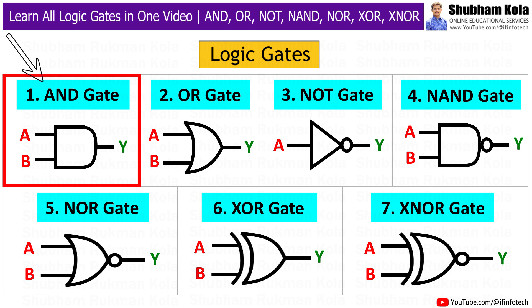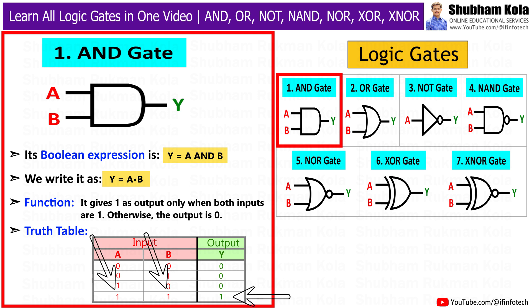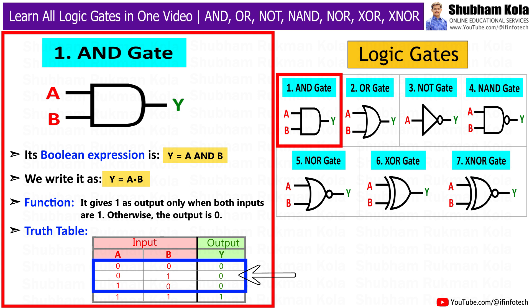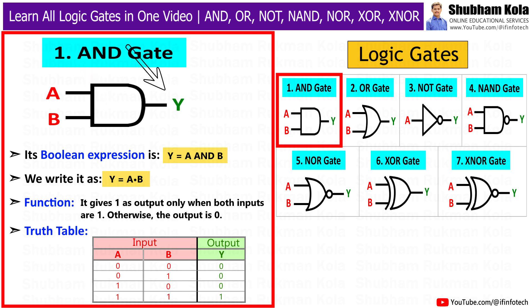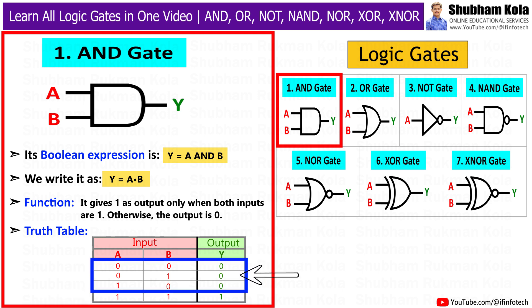The first gate is the AND gate. Its Boolean expression is y = A AND B, written as y = A · B. It gives 1 as output only when both inputs are 1; otherwise, the output is 0. Its symbol has two inputs going into a D-shape, and the output comes out. In the truth table, only when both A and B are 1 is the output y equal to 1; in all other cases, it is 0.